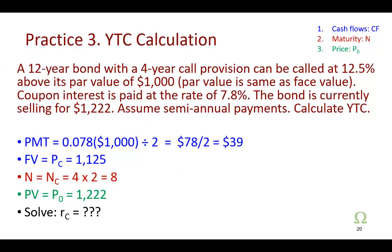All right, and for your own practice, I give you this problem. A 12-year bond with a 4-year call provision can be called at 12.5% above its par value of $1,000. Now, keep in mind, par value and face value and maturity value are all the same. Coupon interest is paid at the rate of 7.8%. The bond is currently selling for $1,222, so this is a premium bond.